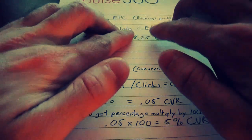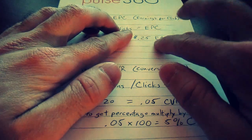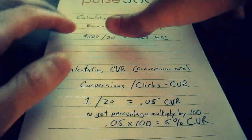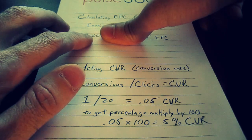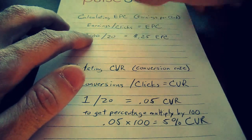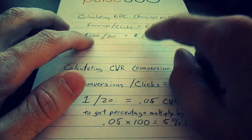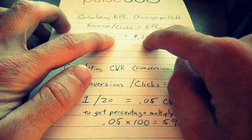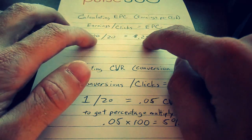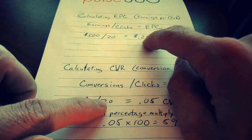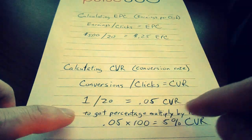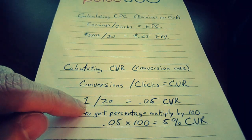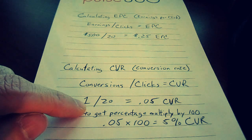Now, if I've given you the EPC on an offer as being 25 cents, and you know that the payout is $5, you can take 5 divided by .25 and you'll get 20. So 1 into 20 is .05. So if you have the EPC and you have the payout, you can find the conversion rate on your own.